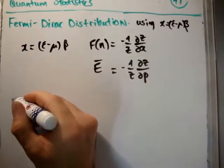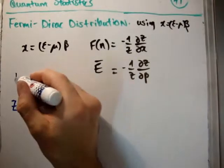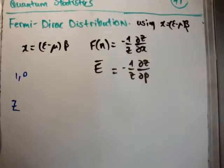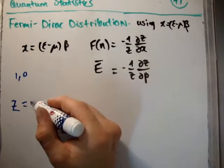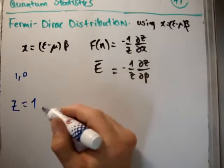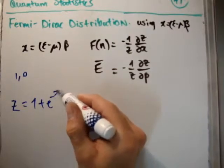We need to calculate the grand partition function for fermions. We know that the occupancy can be 1 or 0—that's just the definition of fermions. So z is equal to 1 plus e to the minus x.